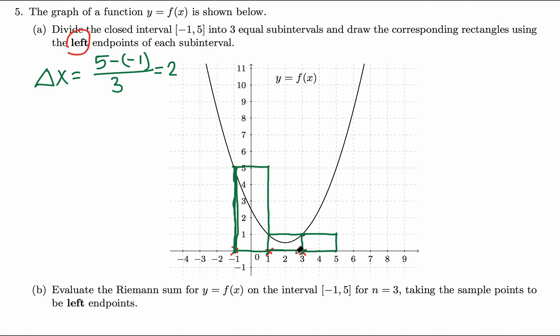So negative 1 through 5, we divided it into 3 parts, 3 equal subintervals with width 2. The heights of the rectangles were determined using the left endpoints. Here, here, and here. Go up to the curve, draw parallel to x-axis. So we got 3 rectangles. That's what we have to do in part A.